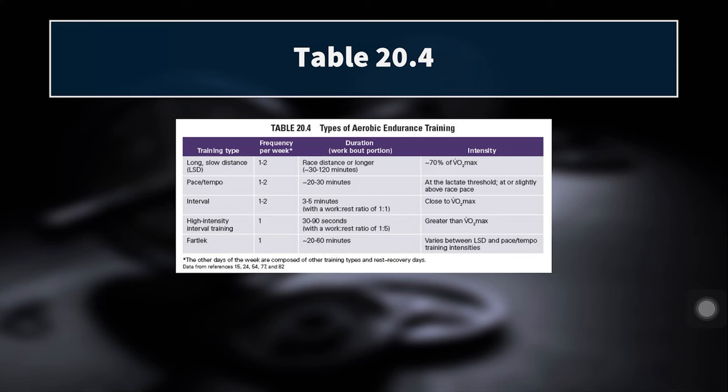We'll be talking about different types of aerobic training as well as some special factors related to aerobic programming such as altitude training, detraining, etc. Now all of this info comes from the NSCA's textbook Essentials of Strength Training and Conditioning. This chapter was written by Dr. Reuter and Dr. Dawes.